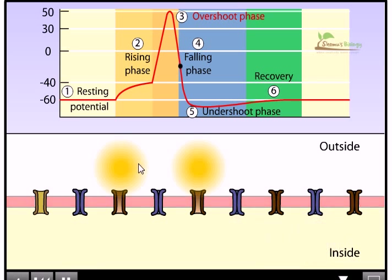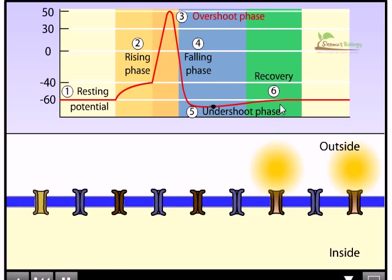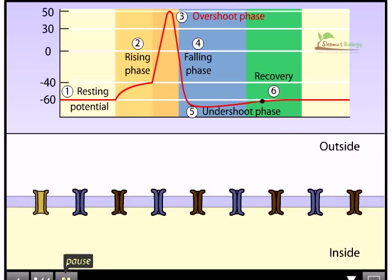Voltage-gated potassium channels open, and it reaches the threshold level, that means the resting potential level. Right after that, they start to fall below the resting potential level. That's because still some of those voltage-gated potassium channels open, and then they start to close, and right after that, they enter the recovery phase.